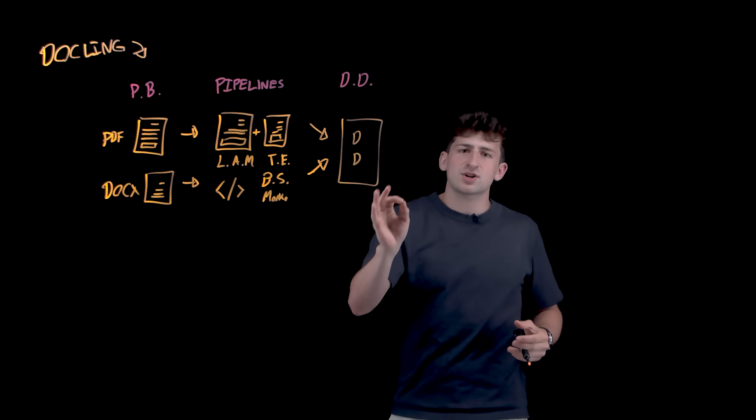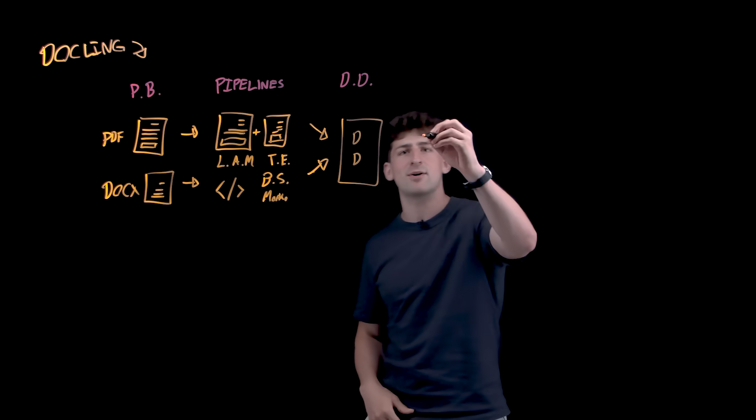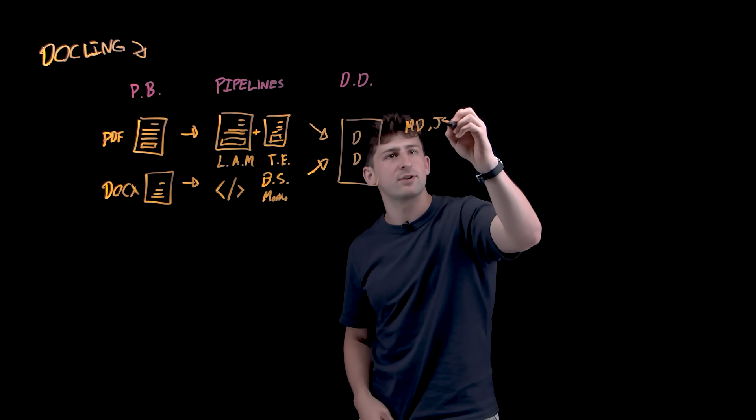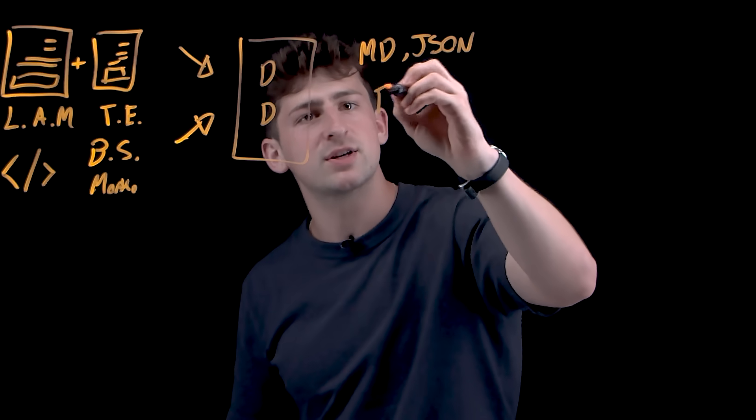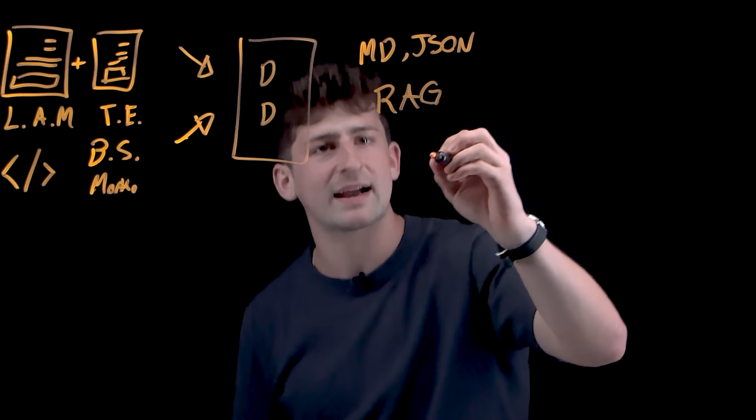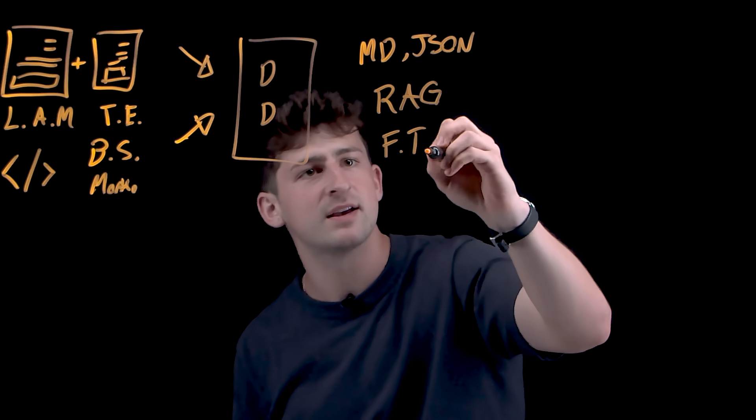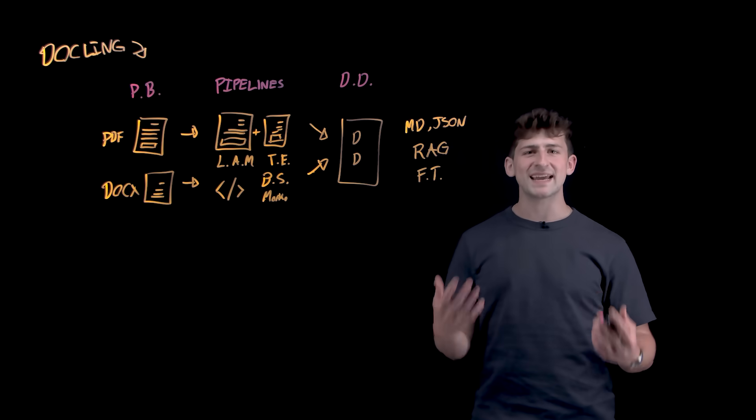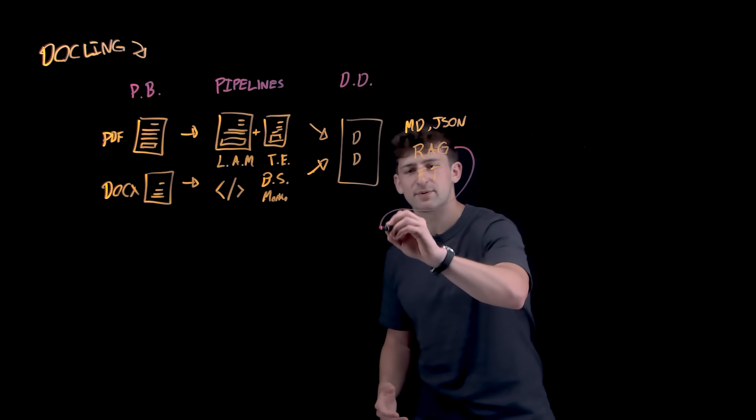And this structure here is ready to be used for powering your agentic and AI applications. So you could export to Markdown, for example, or JSON. You could directly integrate it into your RAG applications, or you could use that exported data in order to do fine-tuning. There's also native integrations with popular developer frameworks,